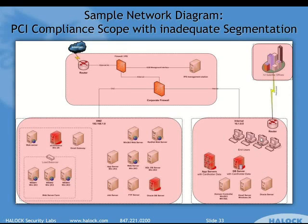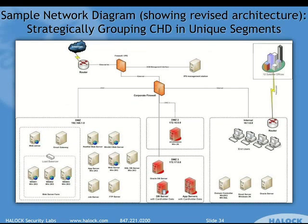If everything is firewalled neatly and segmented, then you have different options. In this case, we would not recommend just going ahead and starting to remediate. We would say, let's first improve our segmentation — hang a couple of new interfaces off of our firewall or maybe deploy some new firewalls, and let's segment out those systems that are handling card data.